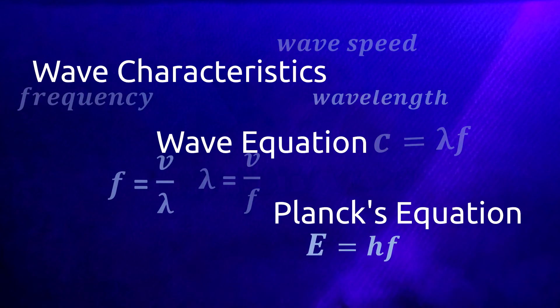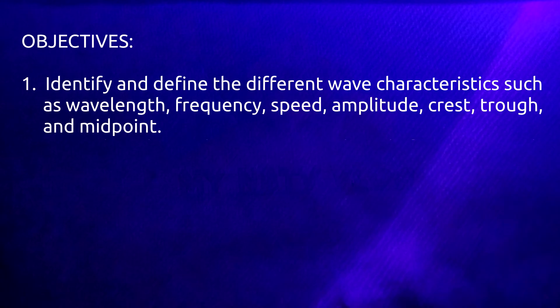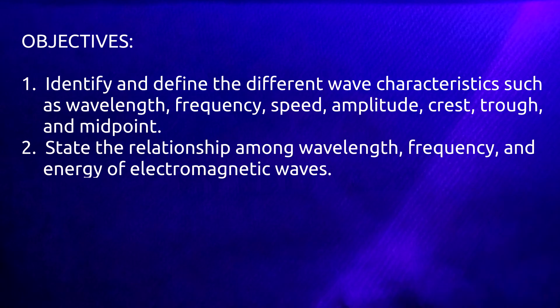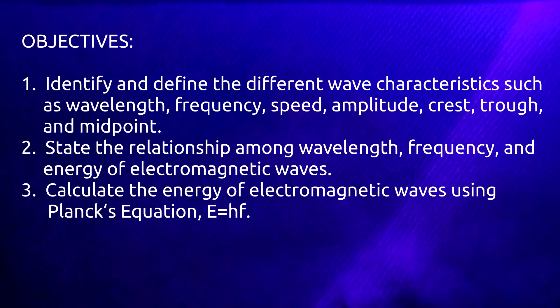In this lesson, you should be able to identify and define the different wave characteristics such as wavelength, frequency, speed, amplitude, crest, trough, and midpoint. State the relationship among wavelength, frequency, and energy of electromagnetic waves. Calculate the energy of electromagnetic waves using Planck's equation E equals hf, and calculate the speed, frequency, or wavelength of electromagnetic waves using the wave equation V equals lambda f.